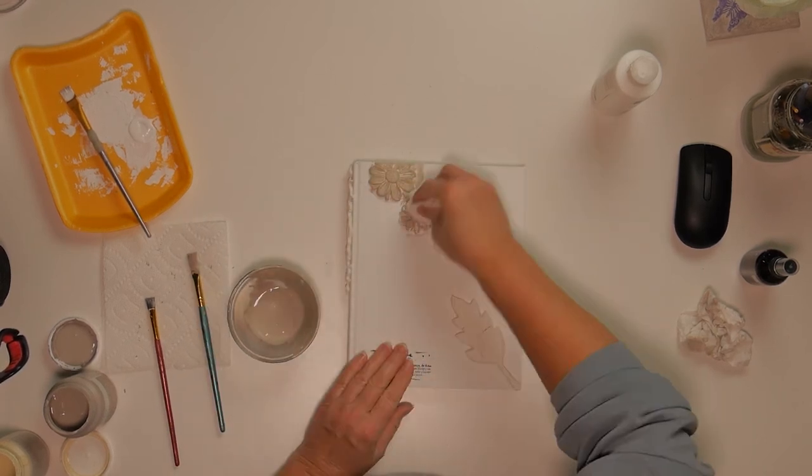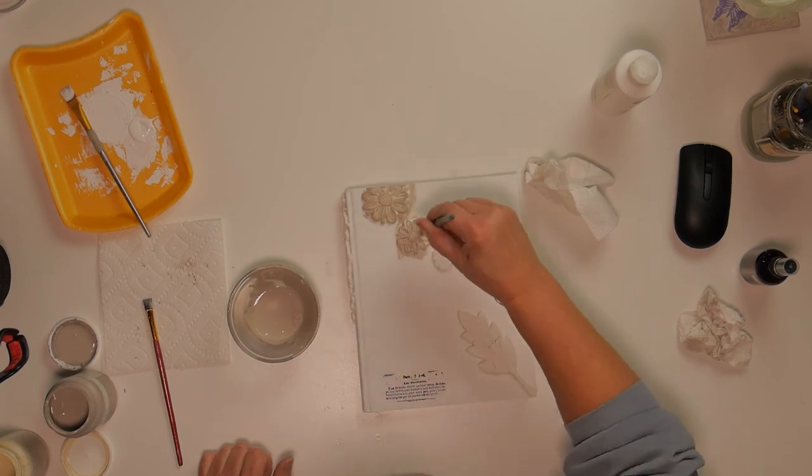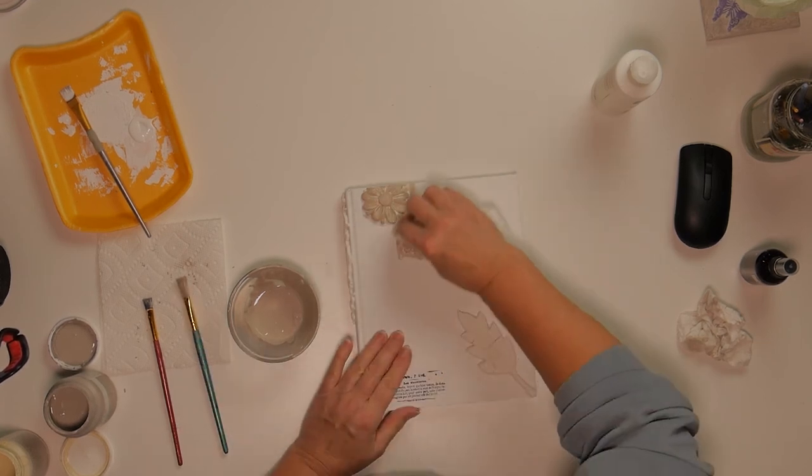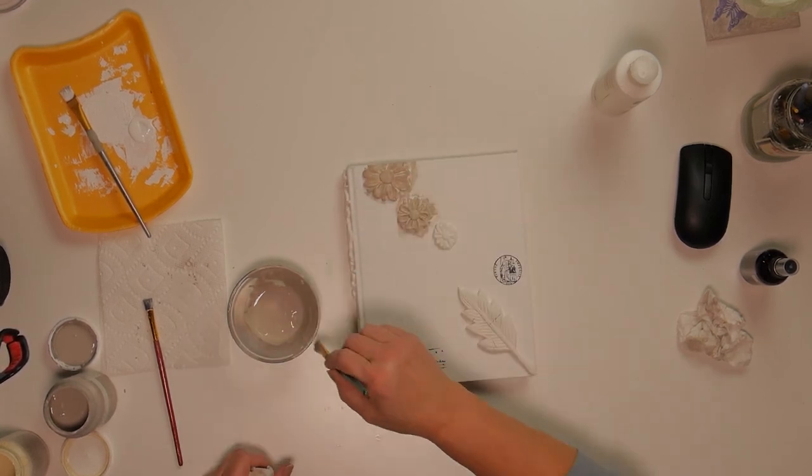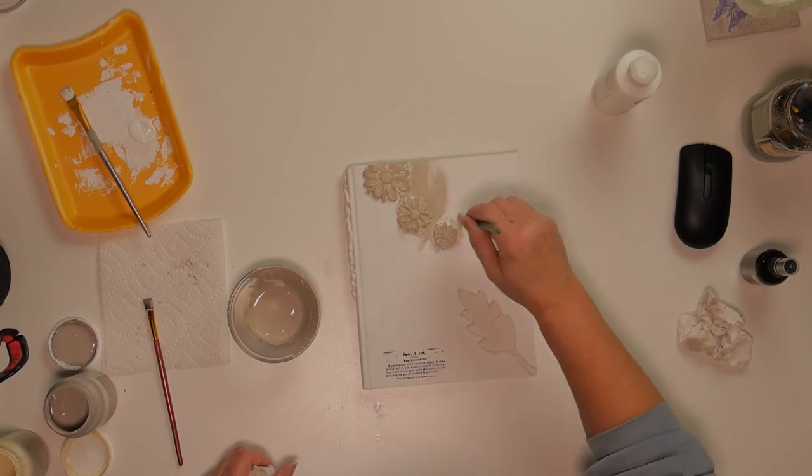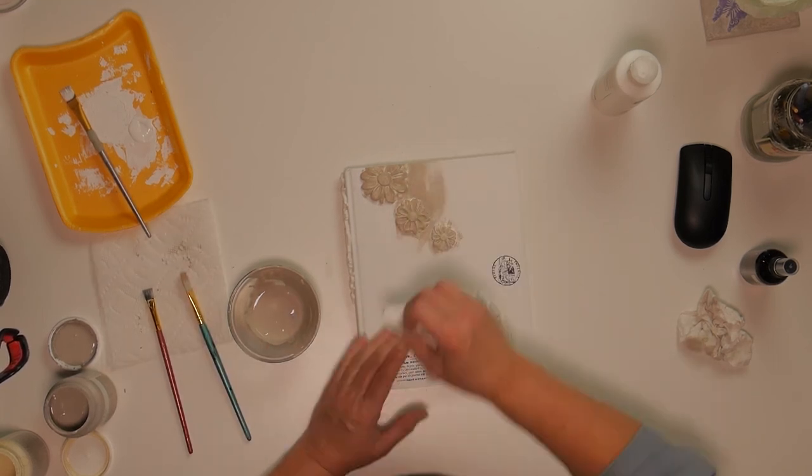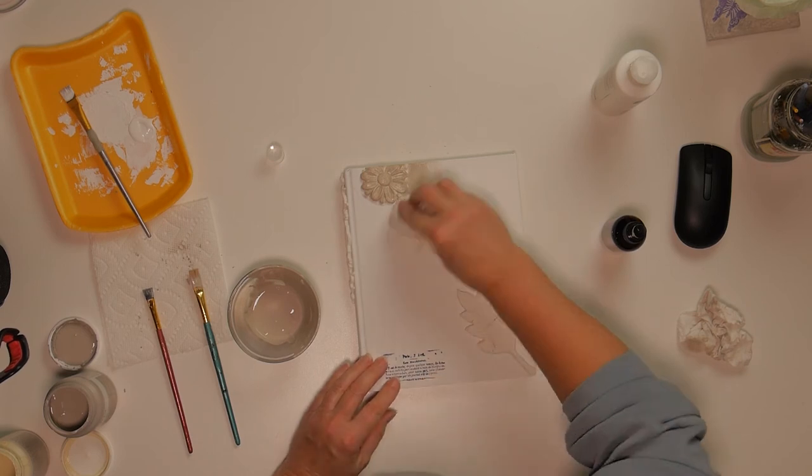So here I'm repeating the same process on the second book, just going on with the Waverly Chalk Paint in Mineral color, and it's watered down like I said. I'm going to put some on and dab it off and give it the antiquey look.